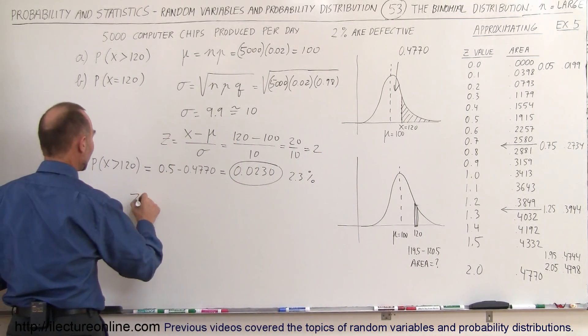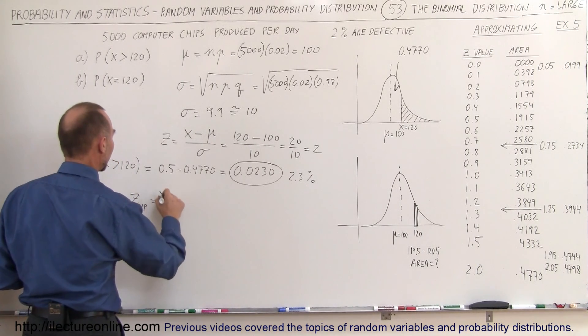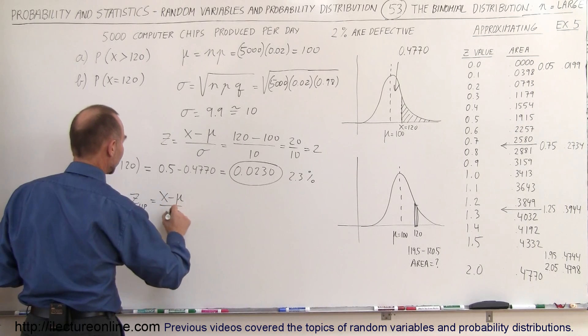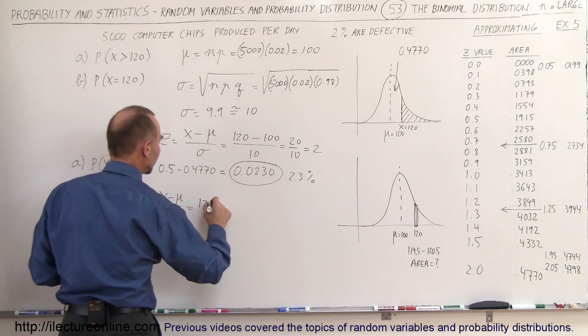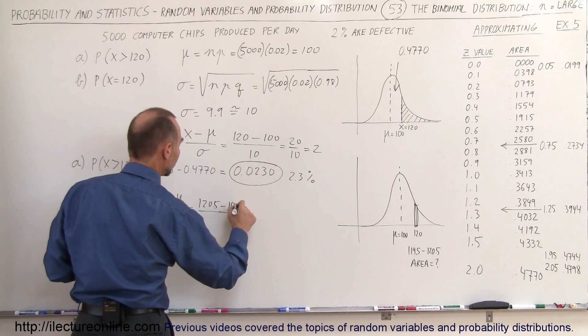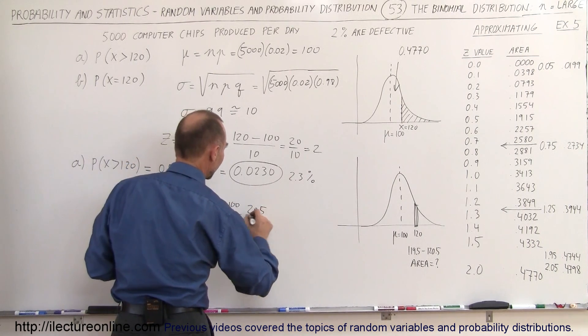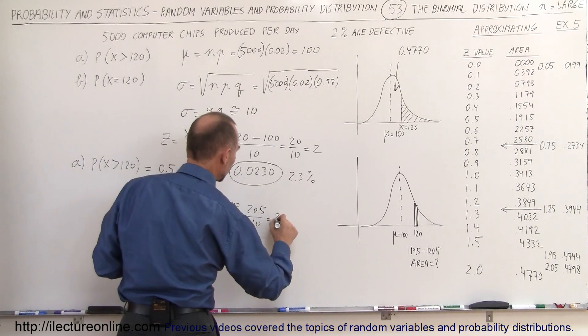So the Z value for the upper limit, which is 120.5, is equal to X minus mu divided by sigma, which is 120.5 minus 100 divided by 10, which is 20.5 divided by 10, which is equal to 2.05.